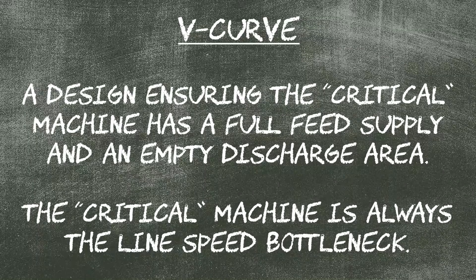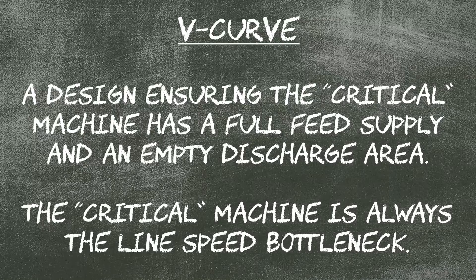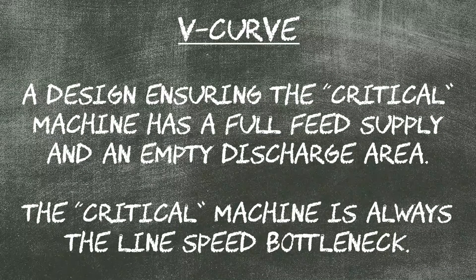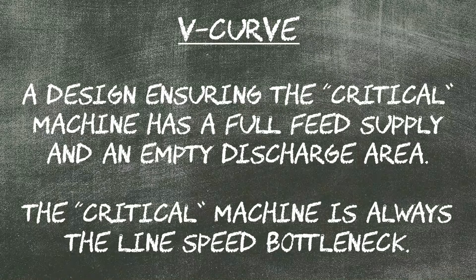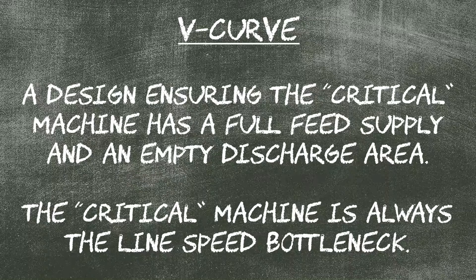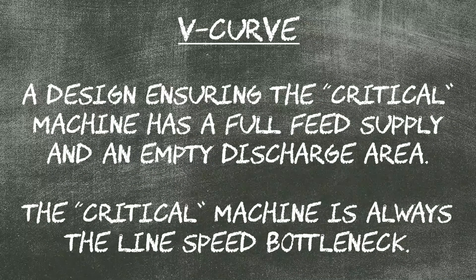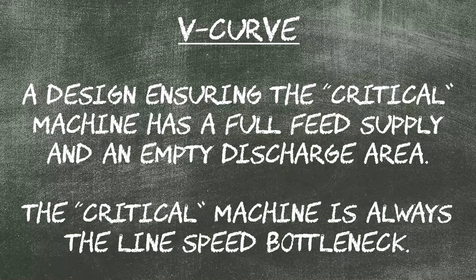We want to talk about V-curve theory. V-curve theory is setting up a critical machine on your line. In most cases it's a filler, but there are other instances where it can be a different machine. The critical machine is your bottleneck on the line, and it's the machine you want to keep running at maximum efficiency in order to get the best efficiency out of your lines.